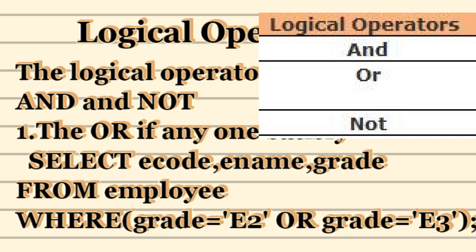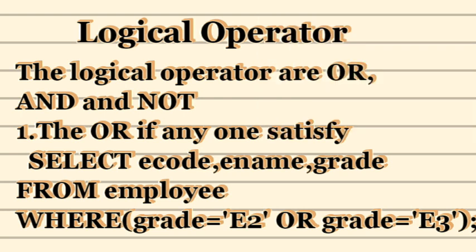The next operator is the logical operator, which works upon some logic. We have three types of logical operators: OR, AND, and NOT. The OR operator is used to specify that only if one of the conditions evaluates to true, you show the desired result.